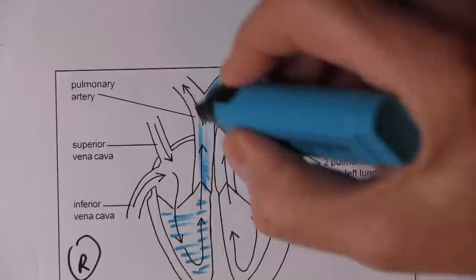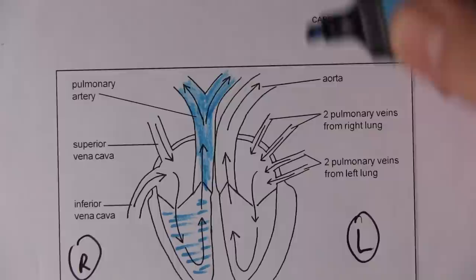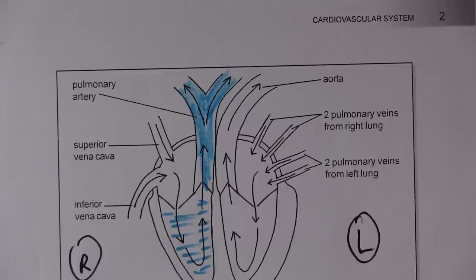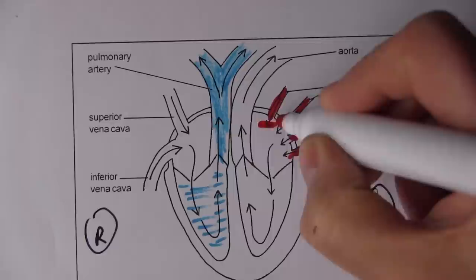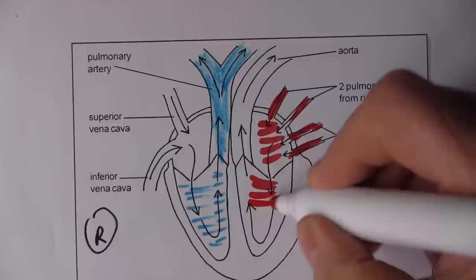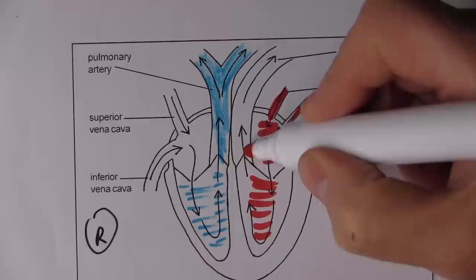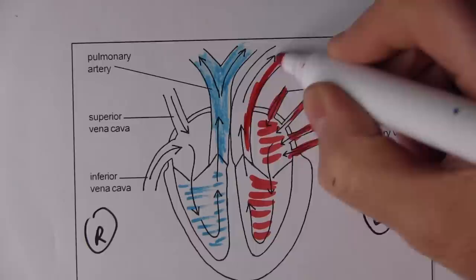The pulmonary artery divides into two quickly because one branch goes to each lung — one to the left lung, one to the right lung. The blood circulates through the lungs, collecting oxygen and giving up carbon dioxide, then comes back via the four pulmonary veins, draining blood back into the left atrium and through to the left ventricle.